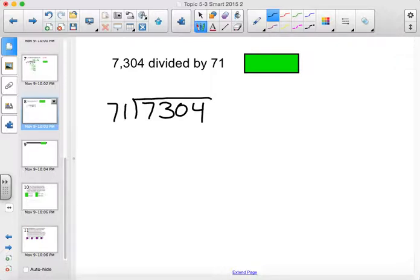71, you cannot go into 7. 71 into 73 will go one time. One times 71 is 71. Subtract, and you end up with a partial remainder of 2. Bring down your 0. 71 cannot go into 20. 20 cannot be divided by 71. So, we have to say it is divided 0 times.